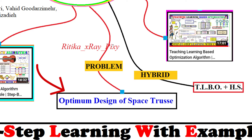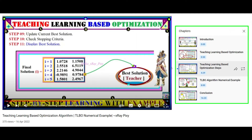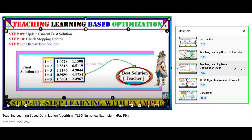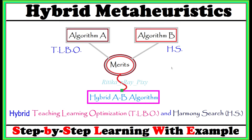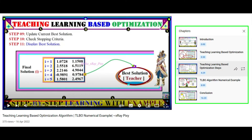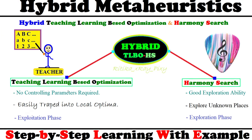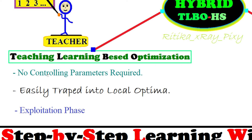The author used the hybrid TLBO to solve the optimum design of space trusses. We already discussed teaching learning based optimization algorithm and harmony search algorithm step by step with numerical examples — you can check the links given below in the description or in the comment section for basic details. Now in this video we will try to understand the hybridization process and how we can combine the merits of these two algorithms.